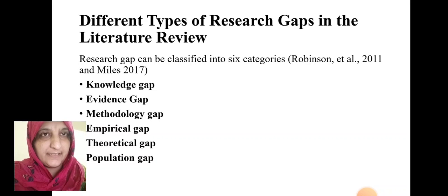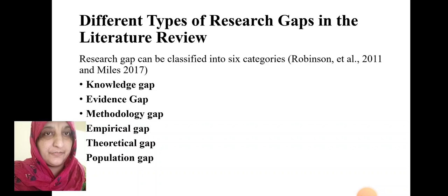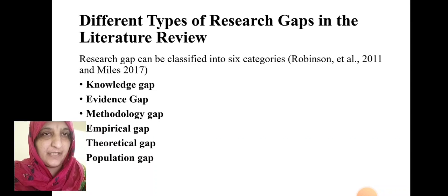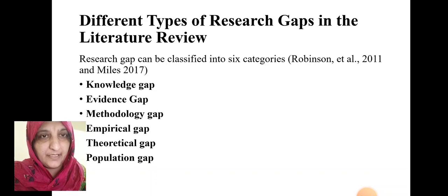Let's have a look at what can be the different types of research gap in literature review, as reported by Robinson and Miles in 2017. That is: knowledge gap, evidence gap, methodology gap, empirical gap, theoretical gap, and population gap.